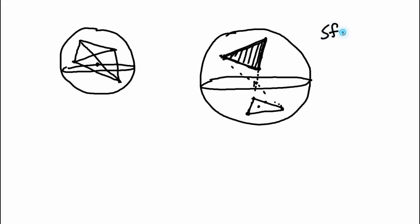Without loss of generality, let's assume the surface area is equal to one. Now we just have to find the expected area of this triangle in order to find the probability that all four points form a tetrahedron that encompasses the center. So what's the expected area of a triangle when you place three random points on the sphere? That's also quite difficult — this is probably the hardest part of the question. Pause the video again if you need to. Find the expected value of the area of a triangle on a sphere where the surface area of the sphere is one and the three points are randomly placed.